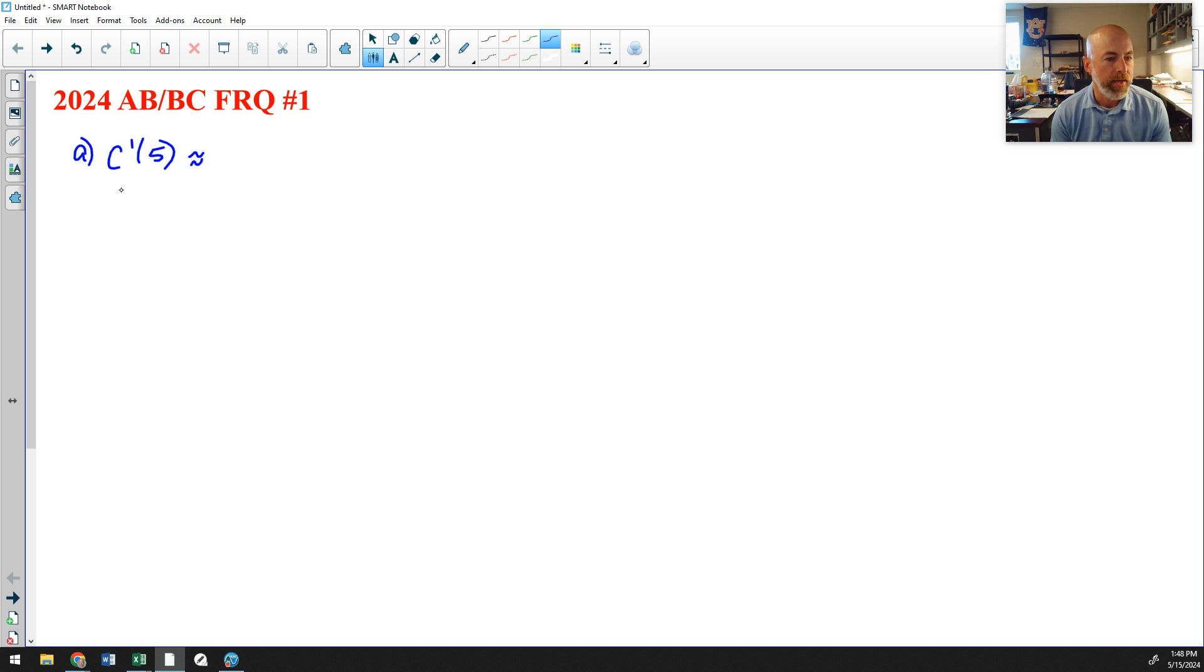Question A, C prime of 5. C is going to be approximately, and we're going to say C 5 is between 3 and 7. They tell you to do the average rate of change from 3 to 7. So that would be approximately C of 7 minus C of 3 over 7 minus 3.